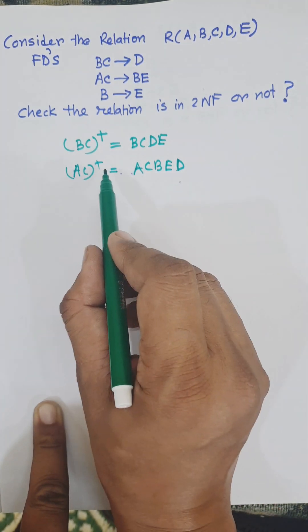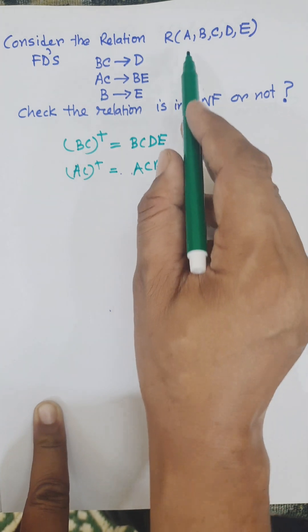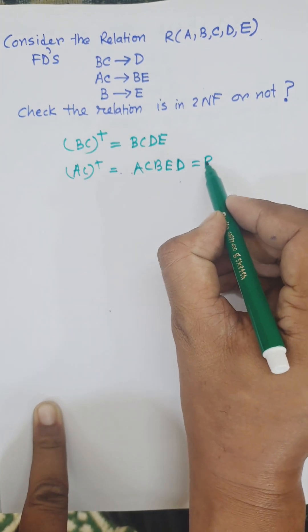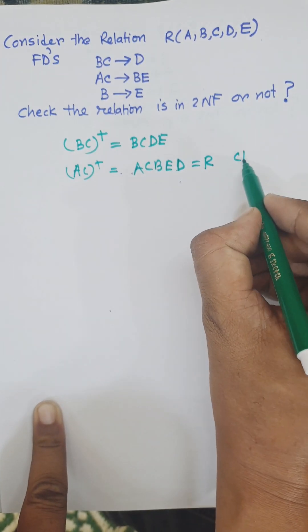Since (AC)+ equals ABCDE, which equals R, AC is a candidate key.